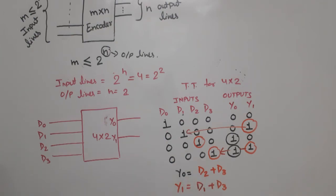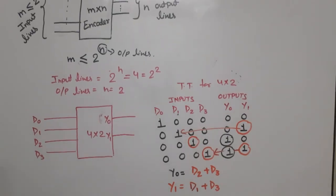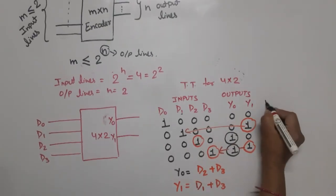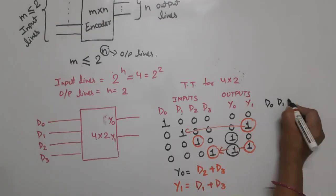If we create this as a logic circuit, we need four inputs D0, D1, D2, D3, and two outputs Y0 and Y1.